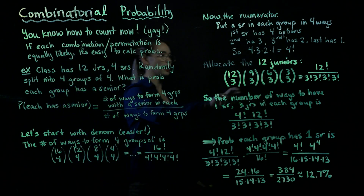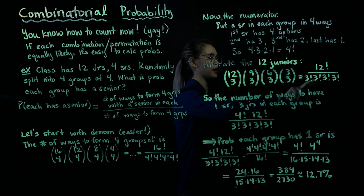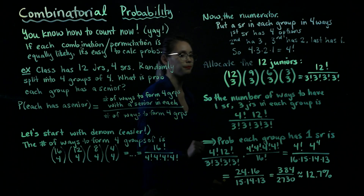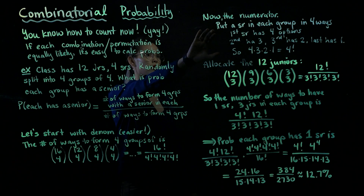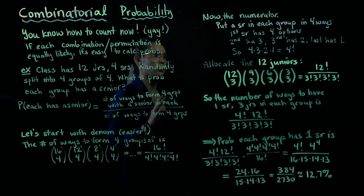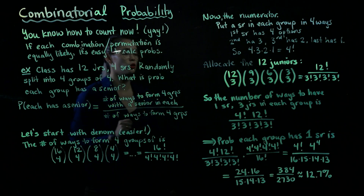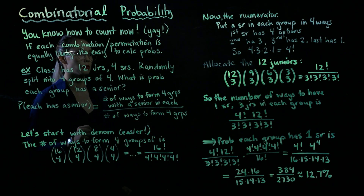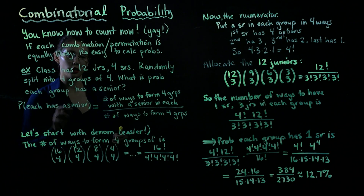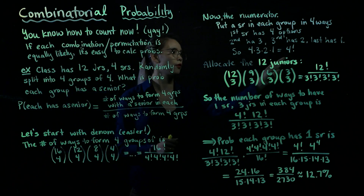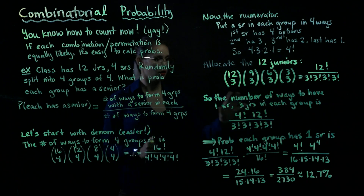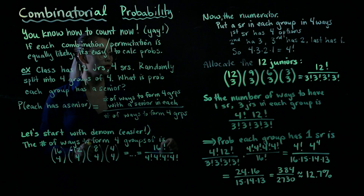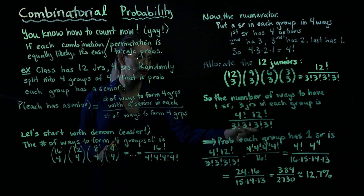If we crunch this out, we get 12 factorial divided by 3 factorial times 3 factorial times 3 factorial times 3 factorial. So here is the number of ways to distribute the seniors into the four groups, and here is the number of ways to allocate the 12 juniors. Using the multiplication rule, the total number of ways to have one senior and three juniors in each group is 4 factorial times 12 factorial divided by 3 factorial to the fourth power.